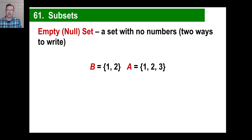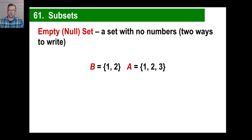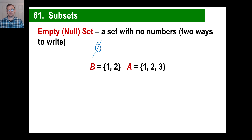The second thing we need to talk about is an empty or null set. Null means nothing — that's a Latin term, nil, as in the word nullify, to make something into nothing. An empty or null set is a set with no numbers in it. You can write it as a zero with a slash through it, or just draw an empty set with nothing inside it. That's your way of indicating there is no example of a number that fits that description.